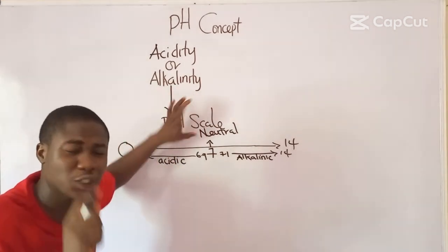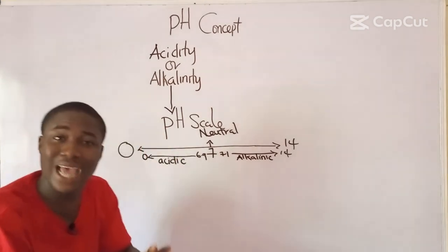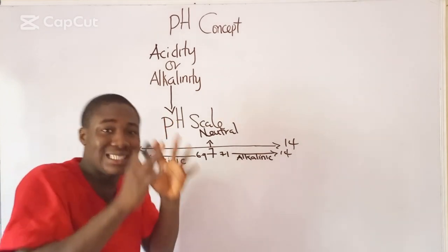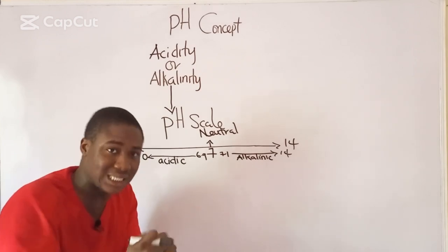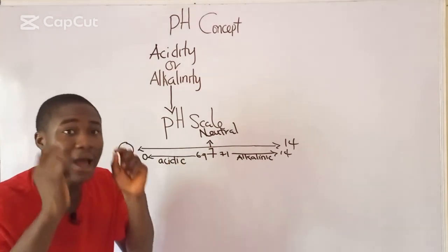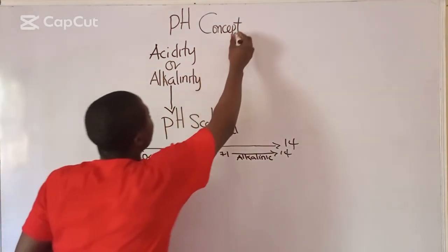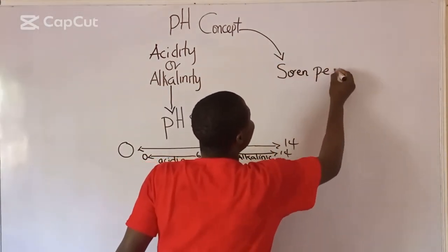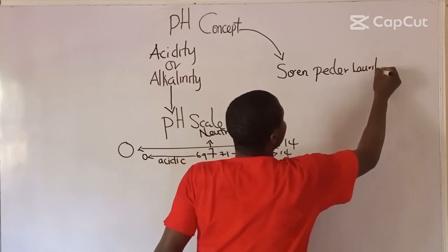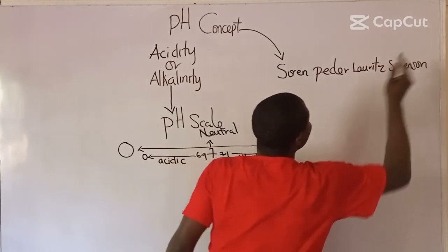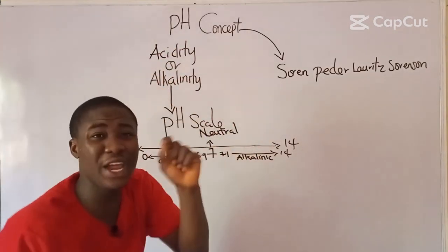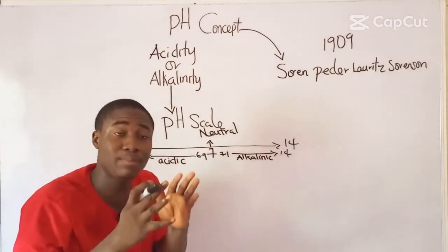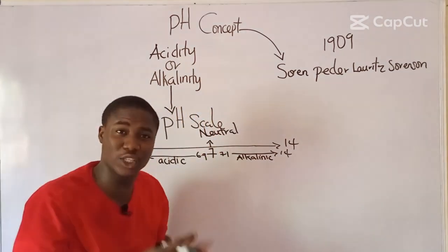To summarize: the pH scale ranges from 0 to 14. From 0 to 6.9 is acidic, 7.1 to 14 is alkaline or basic, and 7 itself is neutral. The concept of pH was brought about by a man called Soren Pedal Loritz Sorensen in the year 1909.